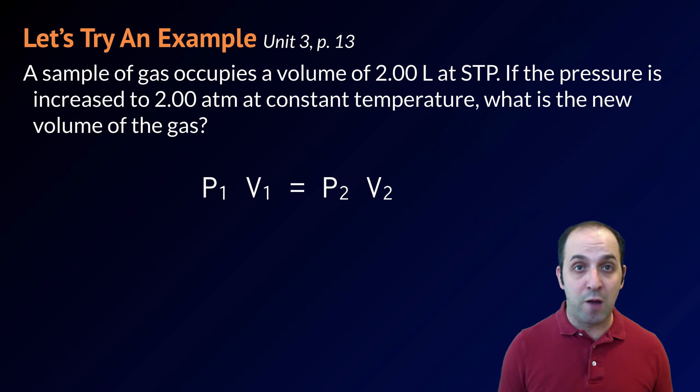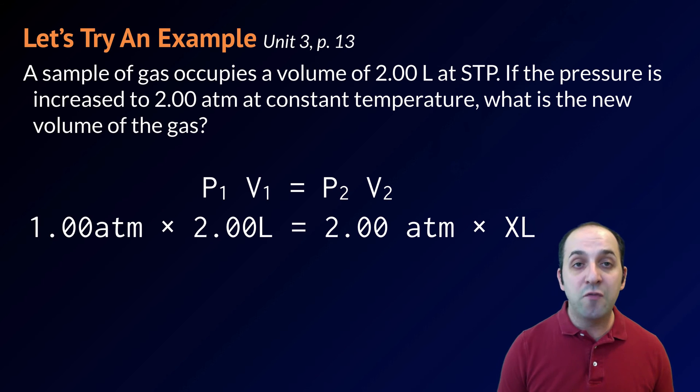So I'm going to use Boyle's law to solve this problem. I know that the initial pressure times the initial volume has to equal the final pressure times the final volume. I'm going to then look at my problem and take the values that I need out of it and plug them into my equation. This winds up being 1.00 atmospheres times 2.00 liters is going to be equal to 2.00 atmospheres times some unknown number of liters.